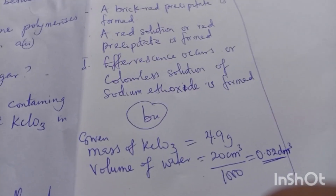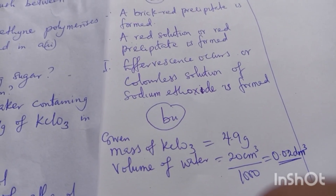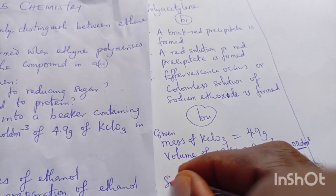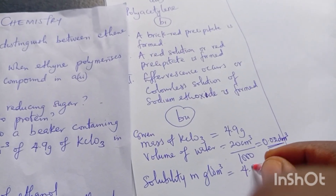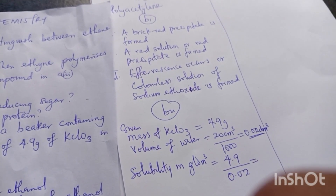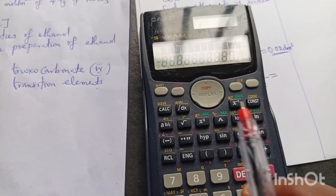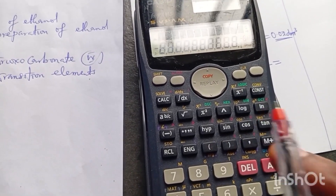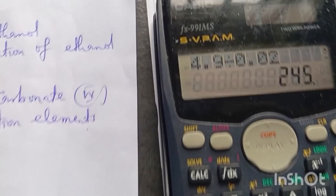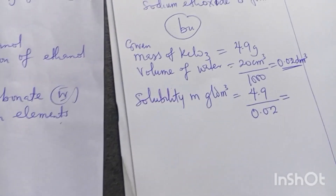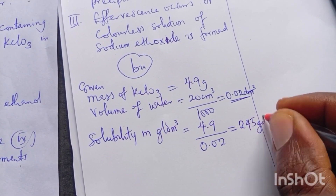Now, solubility in grams per dm³ = mass divided by volume = 4.9 ÷ 0.02. Let me press my calculator: 4.9 divided by 0.02 gives 245. So solubility in grams per dm³ is 245 g/dm³. You can also press your own calculator and put your answer in the comment box.